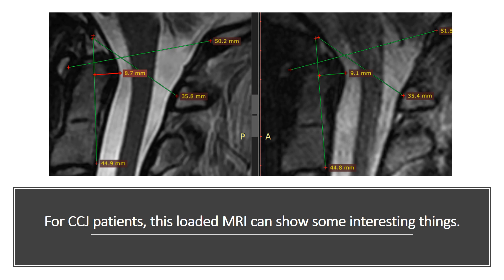For CCJ patients, this loaded MRI can reveal some interesting things. If we look at a static measurement, the one on the left was taken lying face-up and the one on the right was taken upright. The one on the right shows a little bit more abnormal values. Some values on the left are normal, but by the time the patient is seated or standing and imaged, they become abnormal.